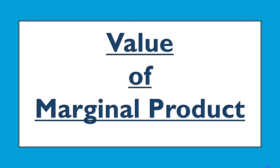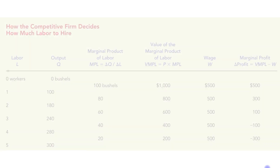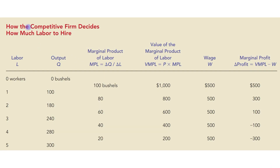Hello students, today's topic is value of marginal product. The value of the marginal product of any input is the marginal product of that input multiplied by the market price of the output. In the last video we have seen the first column of labor, the second column of amount of output, and the third column which was marginal product of labor.